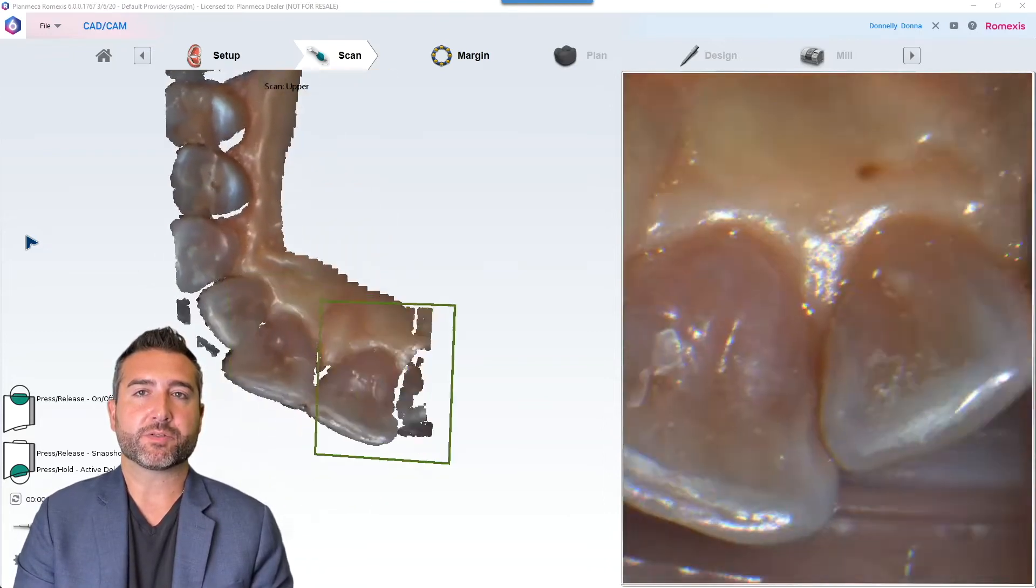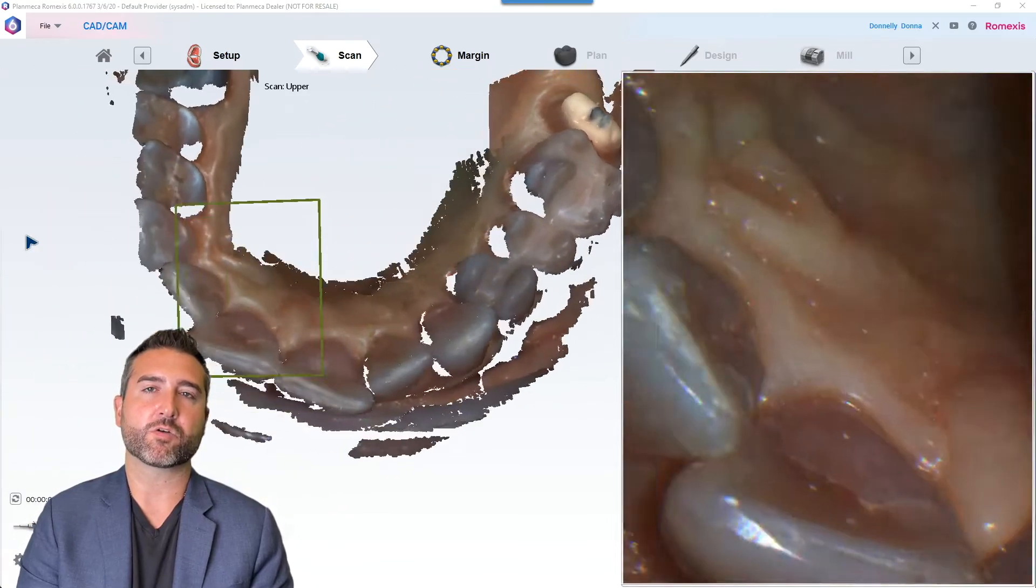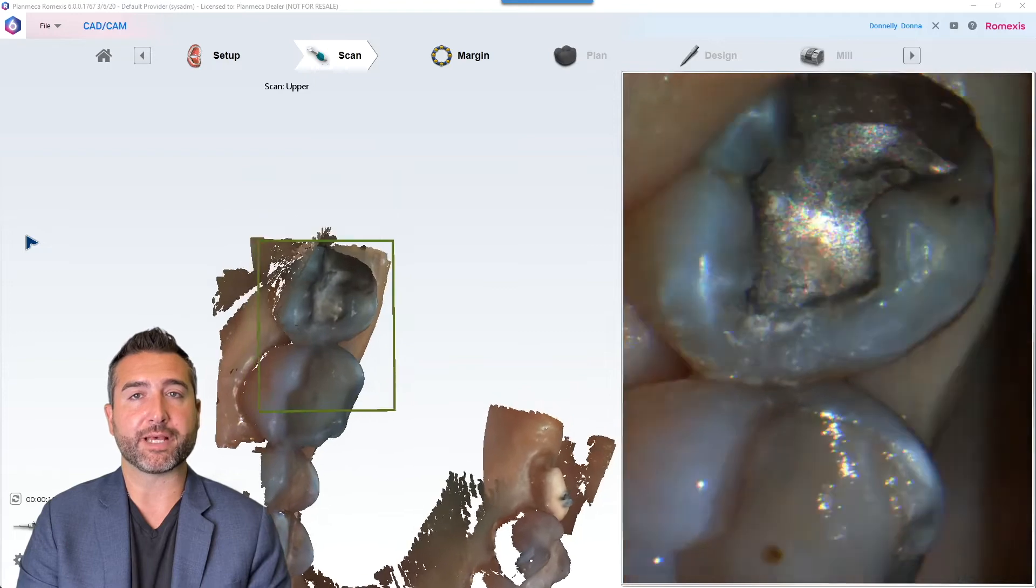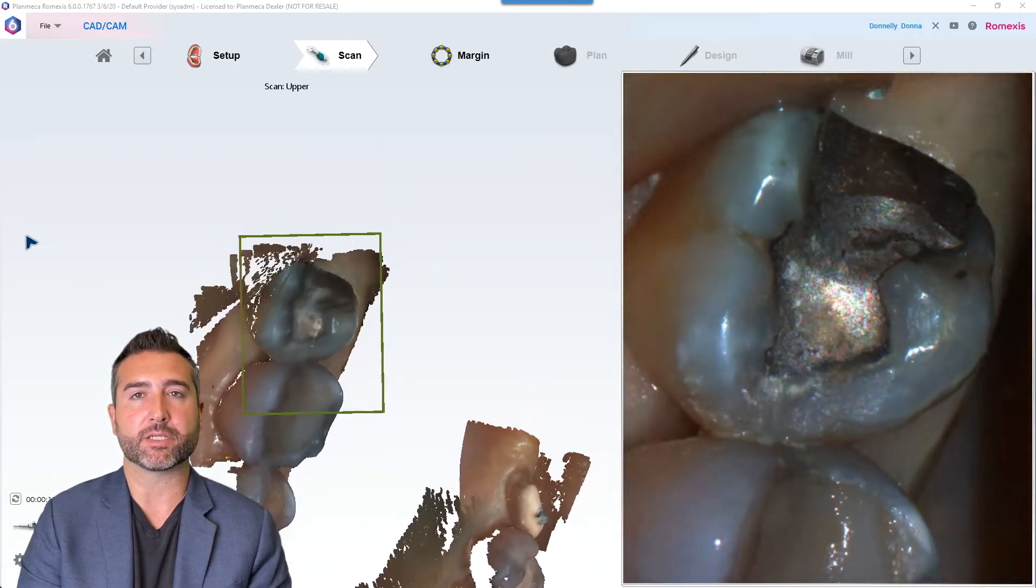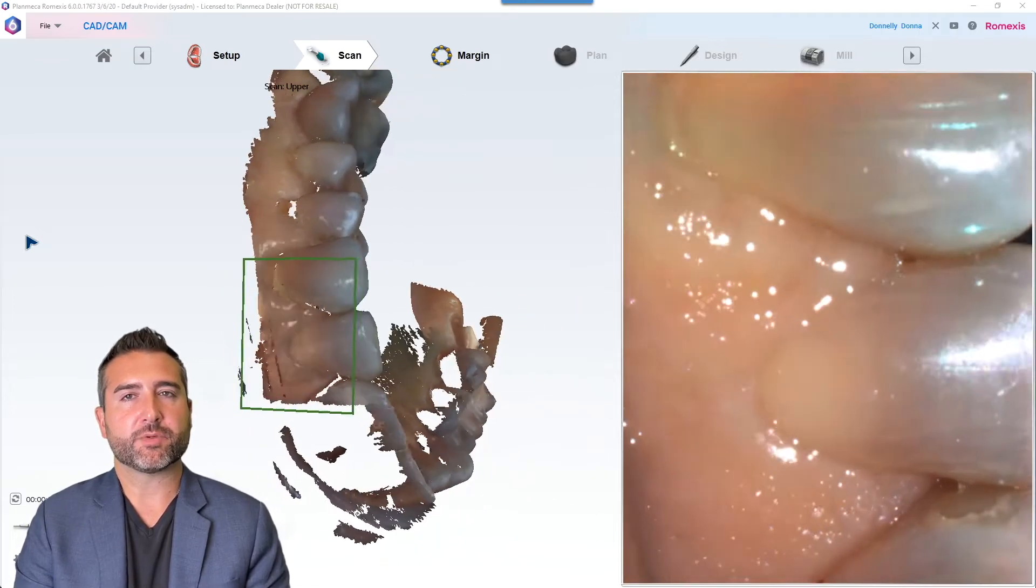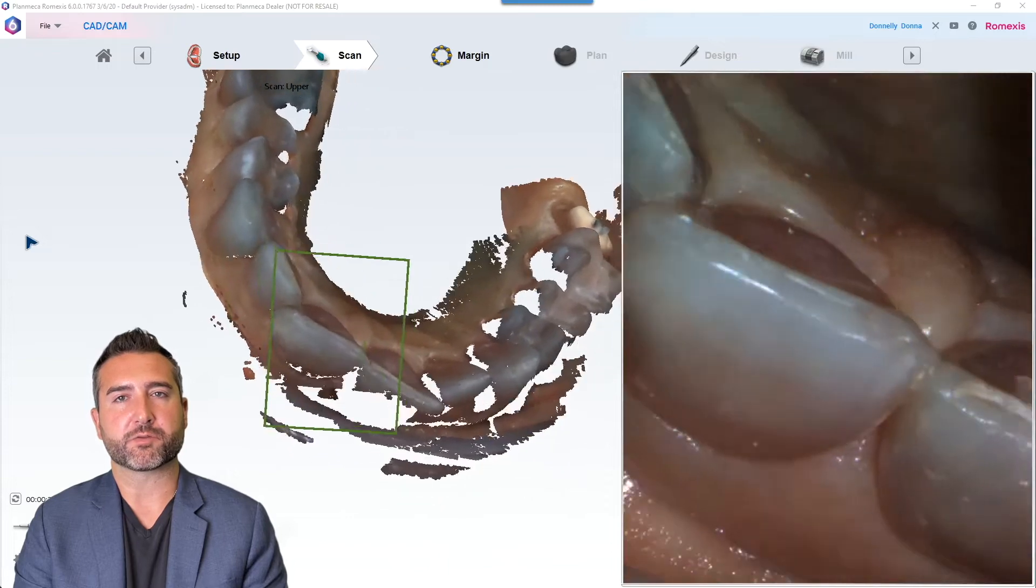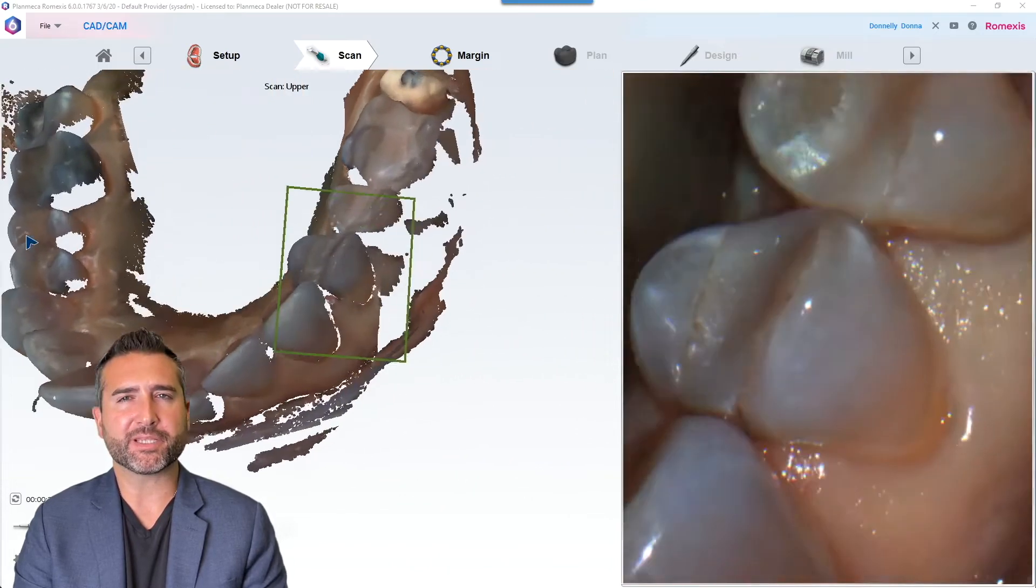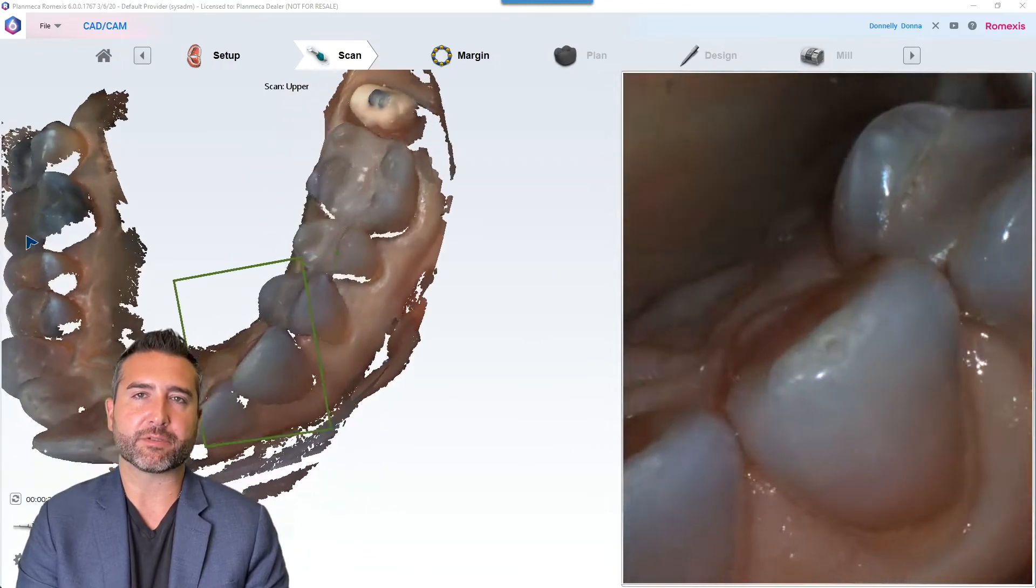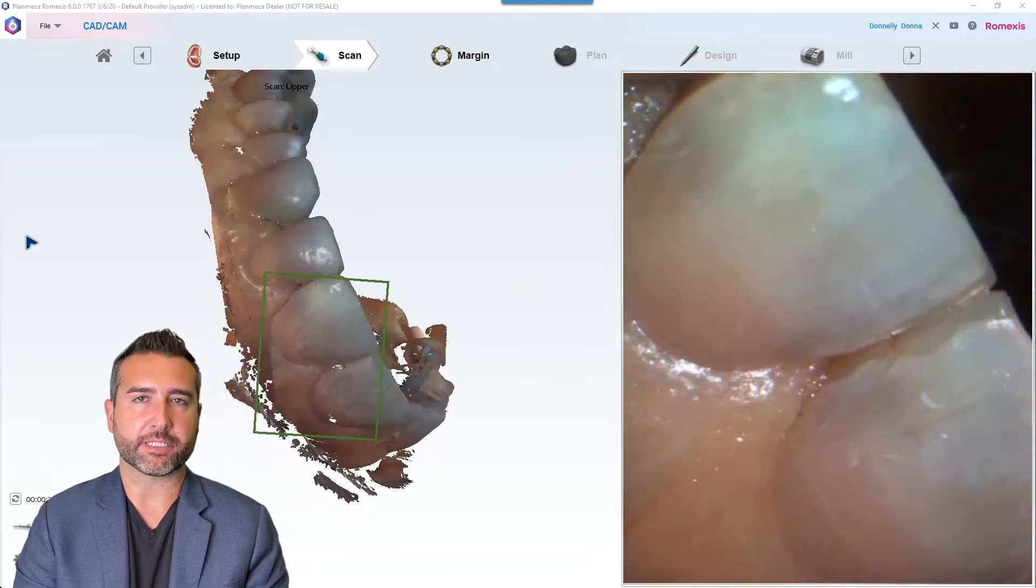Now we're off to the opposing. The opposing is just a fast scan. We don't need every little corner filled in. It's not our working arch scan. It's just for the occlusion and for that buccal bite to be able to align properly. So the opposing scans are done not haphazardly but they're done a lot faster than the arch that you're working on. But the scan patterns followed universally just to get in the habit of doing a good scan pattern where you do those five overlapping passes.